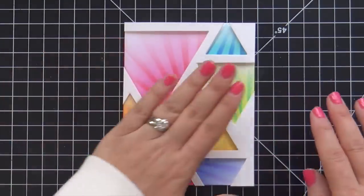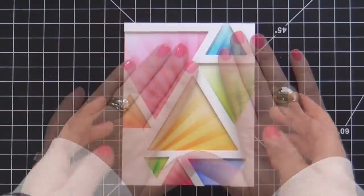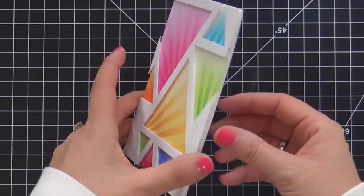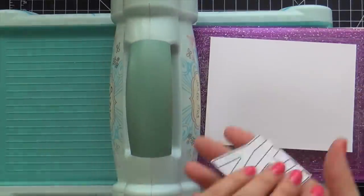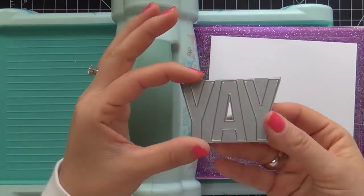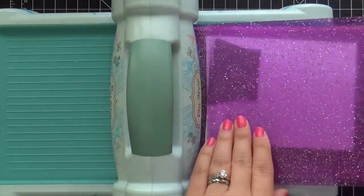I put a bunch of foam tape on the back of that triangle die cut panel, popped it up, and look at that - look at her in all her glory.